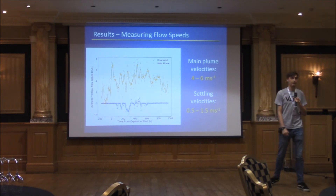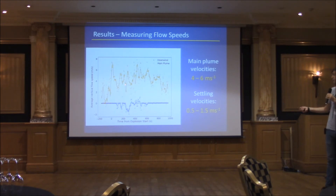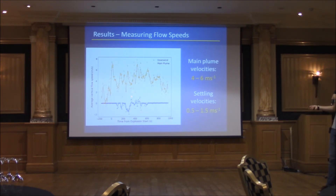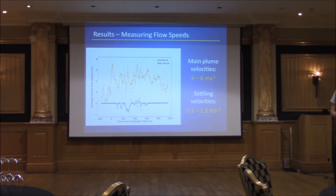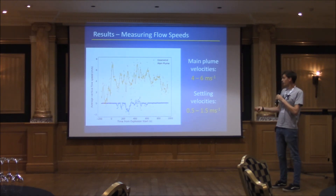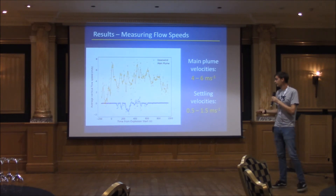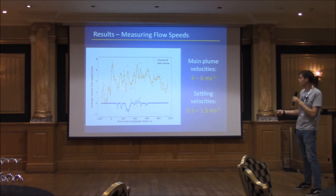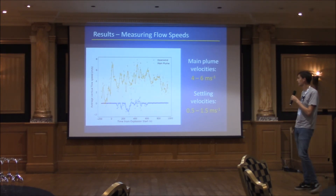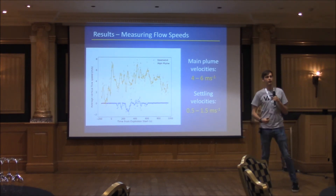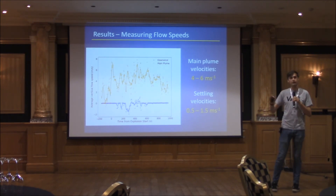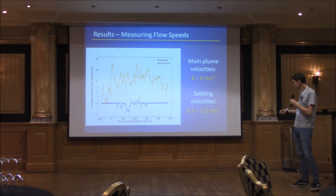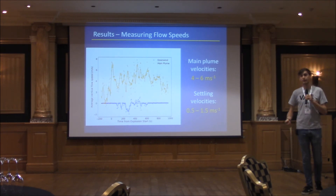We can take the average velocity in these two regions and see what that tells us about plume dynamics. The orange line shows the main plume, with a five-point moving average — we see a nice pulsatory pattern that matches models of Santiaguito's dynamics. The blue line shows the settling region, with three main peaks corresponding to three clumps falling out of the plume. Rising velocities in the main plume were between about four and six metres per second, which is within the expected range of three to fifteen metres per second. Settling velocities were between about 0.5 and 1.5 metres per second.